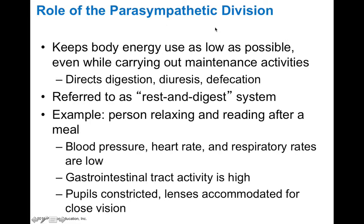The parasympathetic division of your autonomic nervous system keeps body energy use as low as possible. This helps maintain energy for your body and directs digestion, diuresis — which is water loss through urination — and defecation. We refer to this as the rest and digest system.